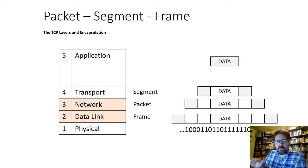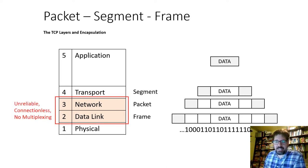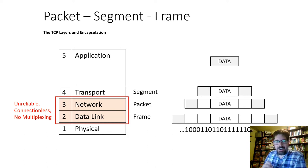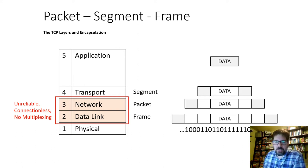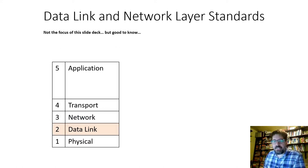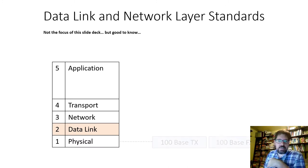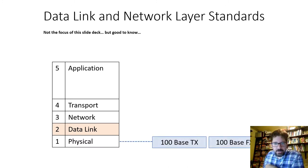We're going to concentrate on layers four, three, and two — transport, network, and data link. The reason I highlighted those is that the network and data link layers are inherently unreliable and connectionless, with no multiplexing — I'll talk more about what that means shortly. There are different protocols at all these different layers.